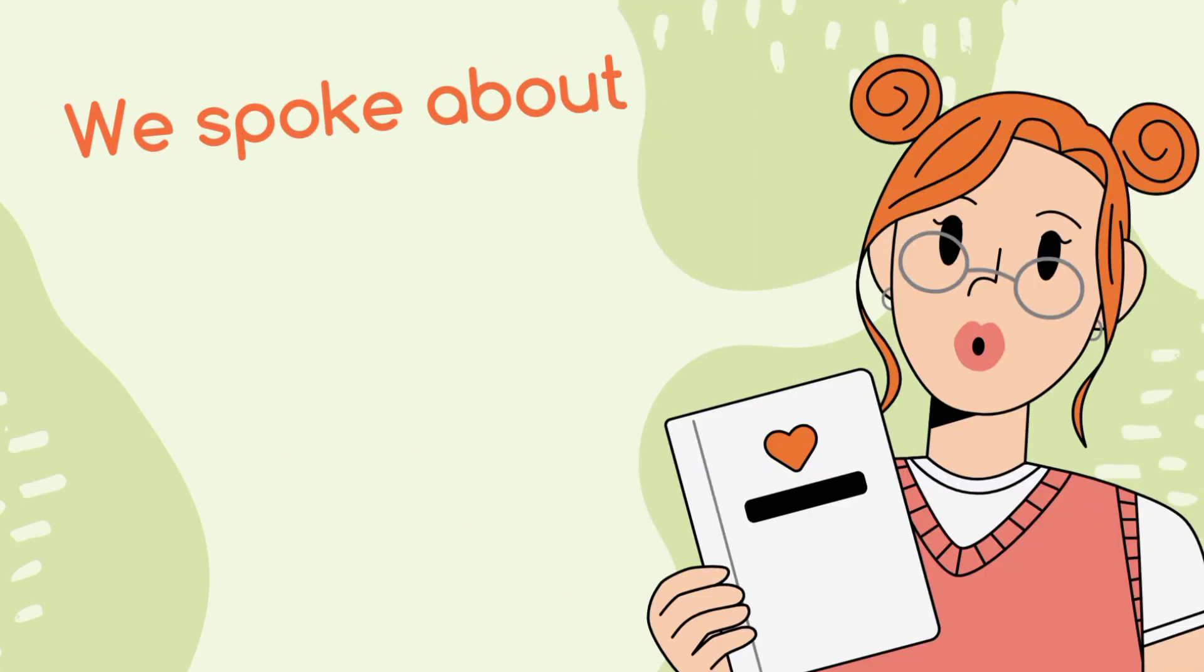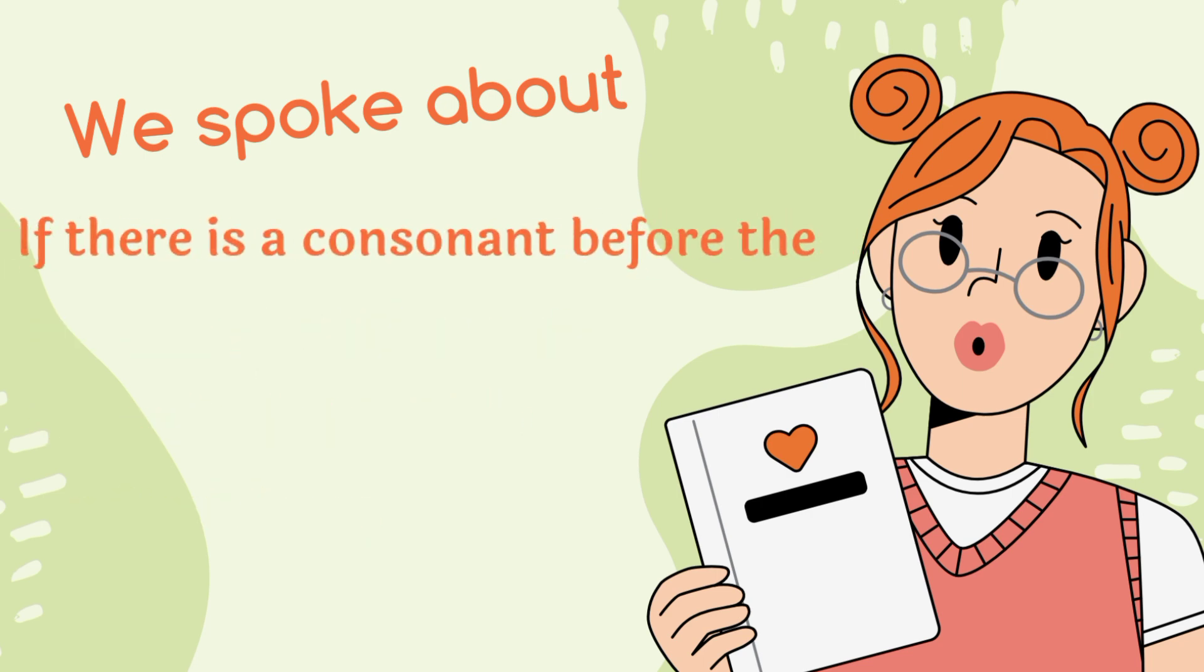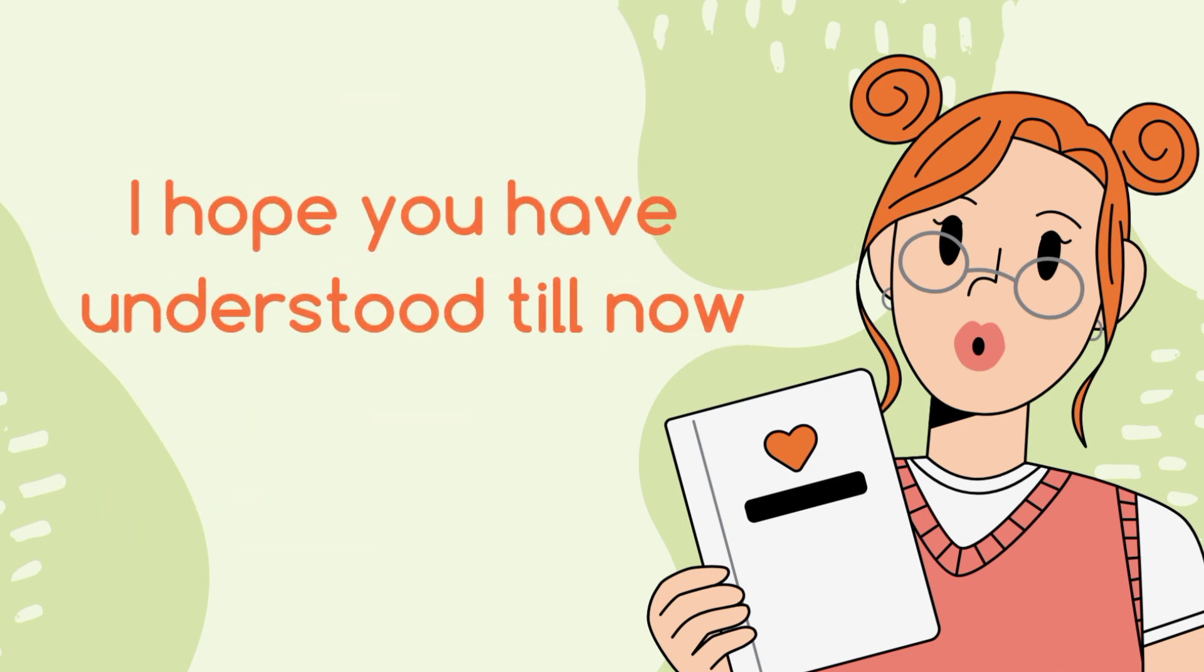We spoke about if there is a vowel before the Y, we add S to the word to make it into its plural form. And if there is a consonant before the Y, we remove the Y and we add IES to convert it into its plural form. Right? I hope you have understood till now.